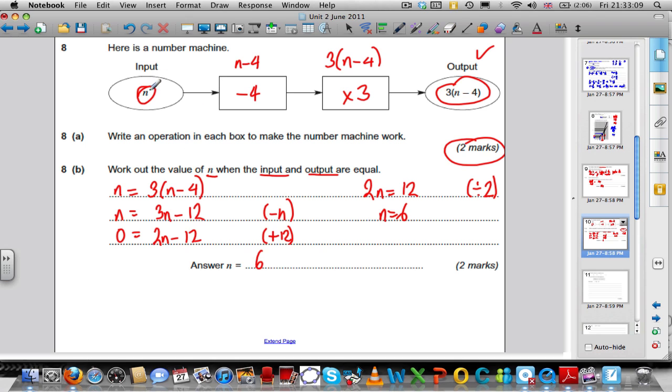Let's check it works. If we put in the number 6, and then we subtracted 4 and times by 3, well, 6 minus 4 is 2. 2 times 3 is 6. You would have got the same input and output.